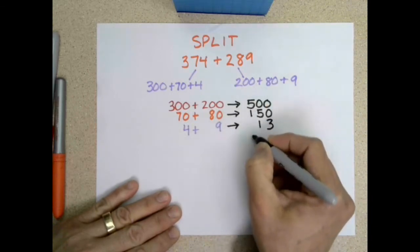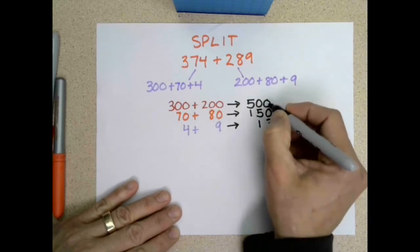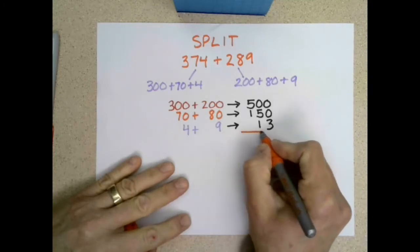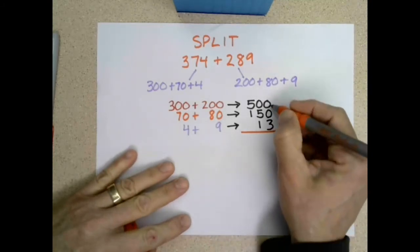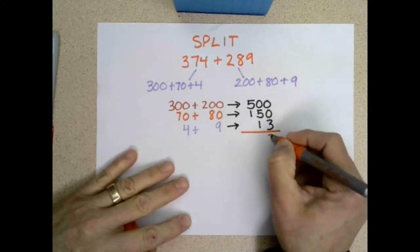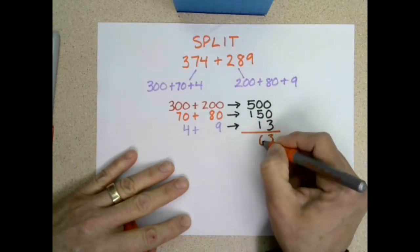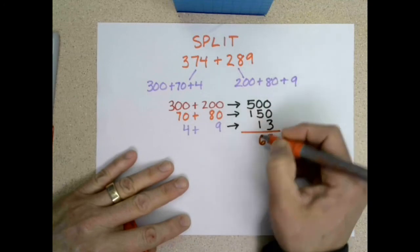Again, I'm keeping the hundreds together, the tens together, and the ones together, and then that way I can simply add right down the line. So zero plus zero plus three is three ones. Zero tens, five tens, one ten is six tens, and 500 and 100 is 600.